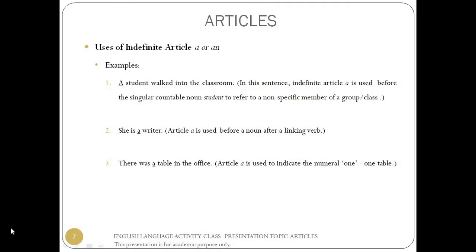Uses of indefinite article a or an — examples. 'A student walked into the classroom.' In this sentence, indefinite article a is used before the singular countable noun student to refer to a non-specific member of a group or class. 'She is a writer.' Article a is used before a noun after a linking verb. 'There was a table in the office.' Article a is used to indicate the numeral one, i.e. one table.